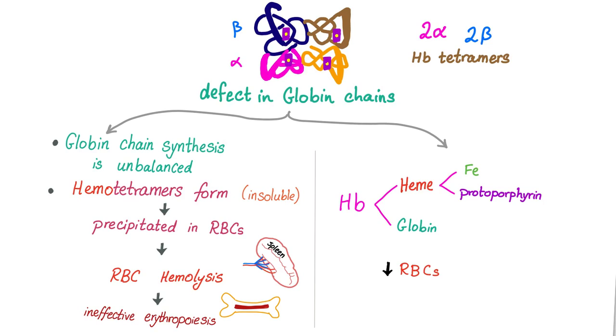Two things will happen. Number one, decreased globin synthesis will lead to decreased hemoglobin, because hemoglobin consists of heme and globin. Decreased hemoglobin synthesis will lead to decreased number of RBCs, i.e. anemia, because anemia has low RBC count, low hemoglobin, and hematocrit. That's number one.